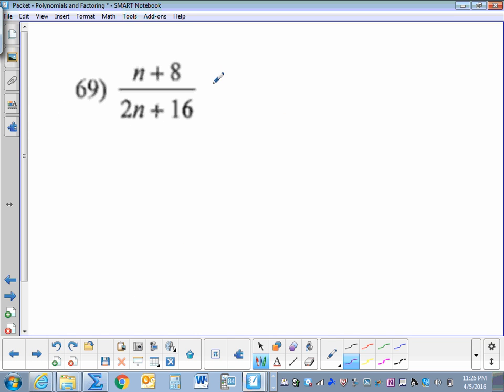Let's look at one with a binomial in there. We have n plus 8. Let's factor the denominator as 2 times n plus 8. Just like if they were numbers, we can eliminate these binomials top to bottom. n plus 8 divided by n plus 8 is 1. So that equals 1 half.